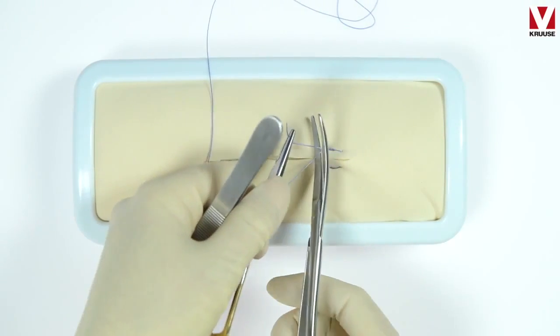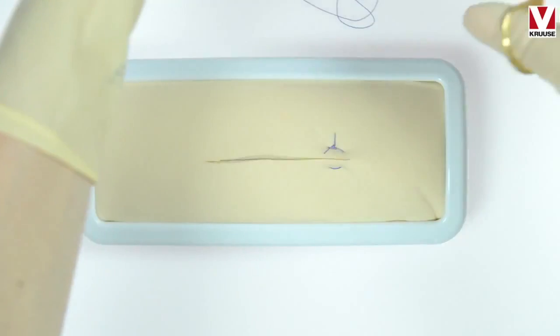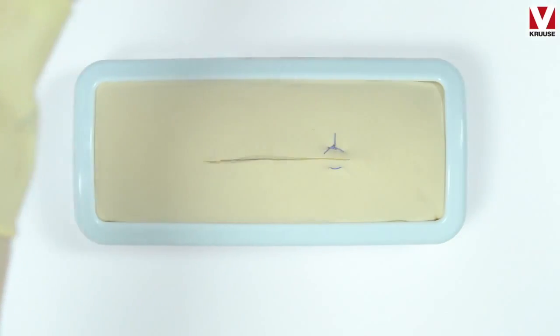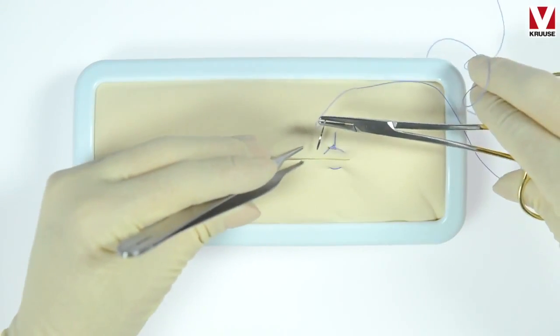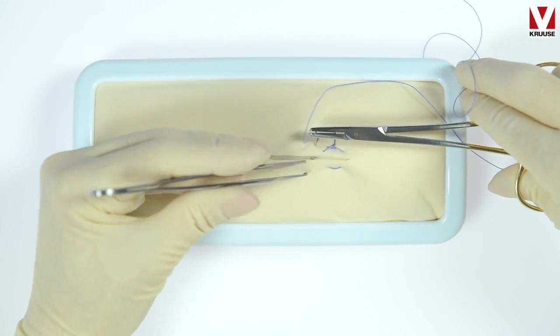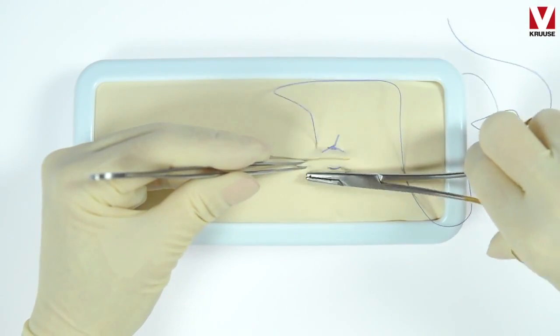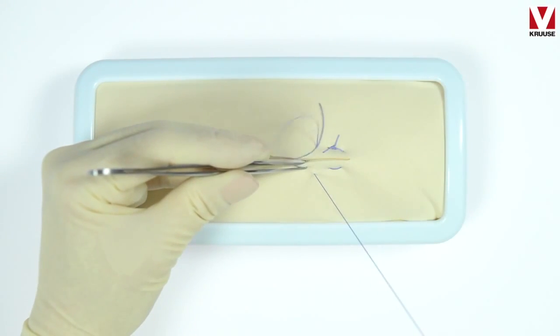When you're using this suture pattern for skin closure, please make sure to use a monofilament and non-absorbable suture. Here we go again, the far near and then near far. I'm not grabbing the suture with my needle holder.